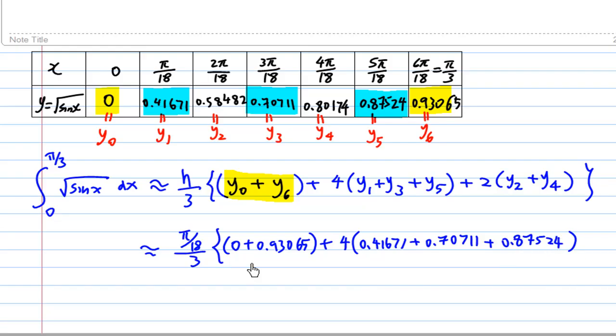Then followed by 2 times the even position y, which is y2 and y4, so I write here 0.58482 plus 0.80174.